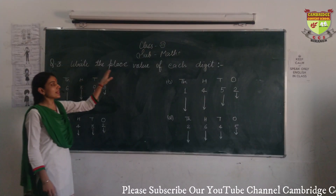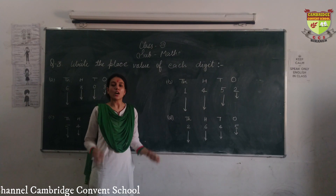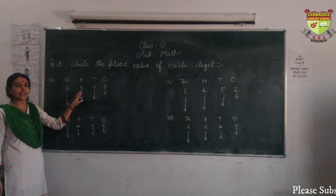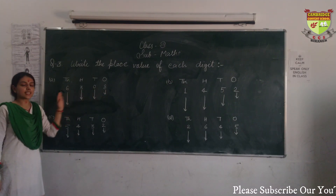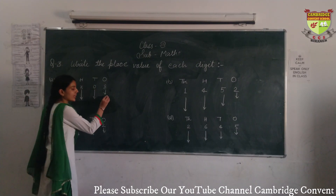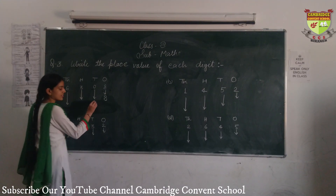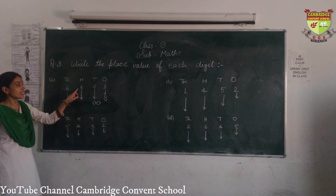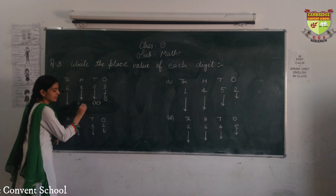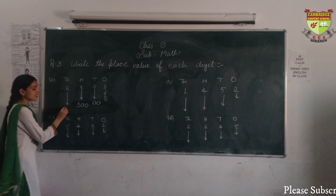Question 3: write the place value of each digit. Place value is the value of a digit according to its place or position. First number: 6,308. Starting from the right: 8 is in 1's — place value of 8 is 8. 0 is in 10's — place value of 0 is 0. 3 is in 100's — place value of 3 is 300. 6 is in 1000's — place value of 6 is 6,000.